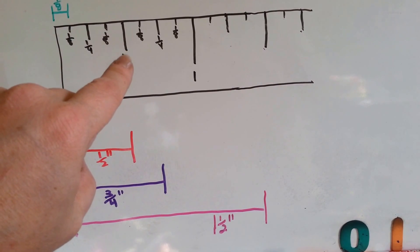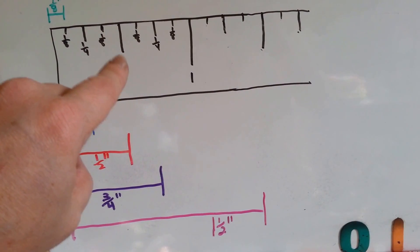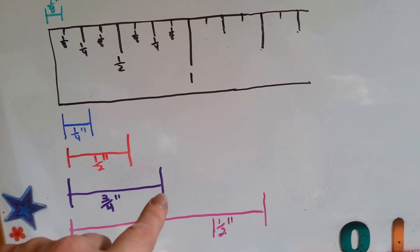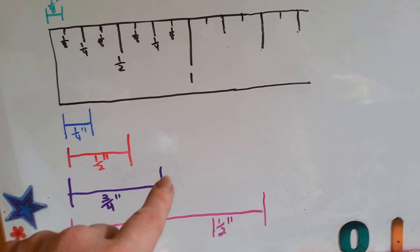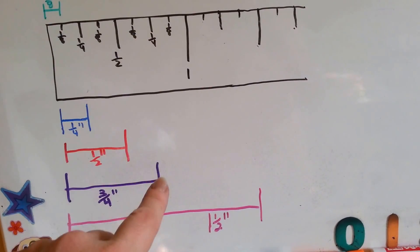And this purple one is three-fourths inch. We've got one-fourth, two-fourths, three-fourths, because that takes the place of half inch and two-fourths. It's the same thing. This purple right here shows three-fourths of an inch. Not a full inch yet, but it's three-fourths of an inch.